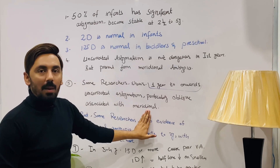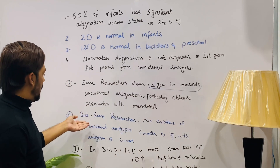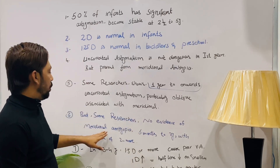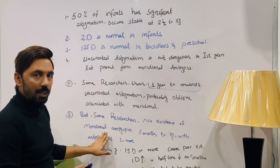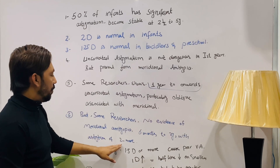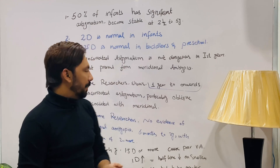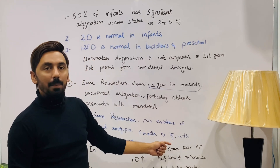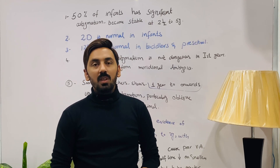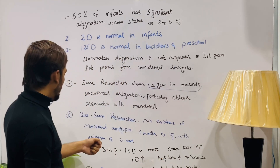In contrast, other research shows there is no evidence of developing meridional amblyopia at the age of six months to three years if astigmatism is two diopters or more and left uncorrected.